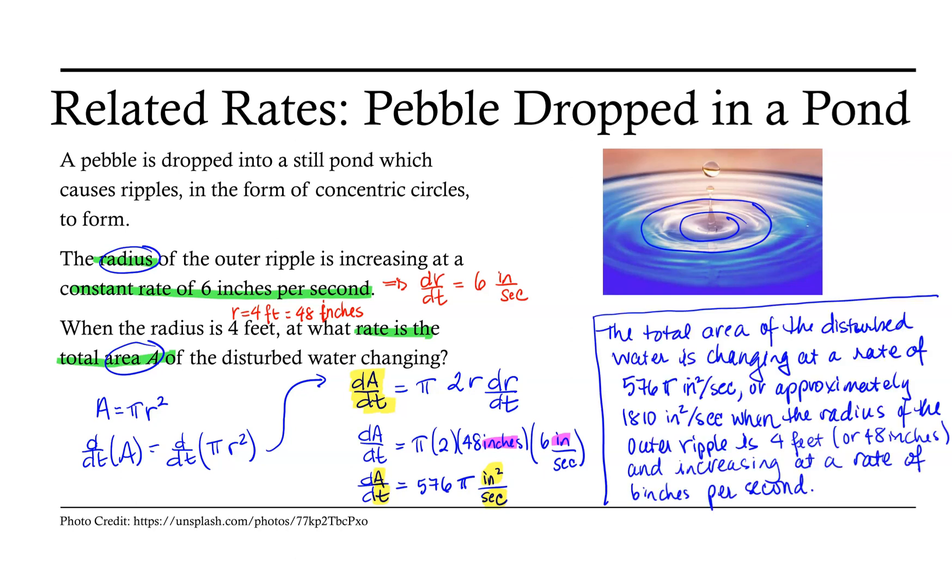So all that's left is for us to interpret what this means. We find that the total area of the disturbed water is changing at a rate of 576 pi square inches per second, or approximately 1810 square inches per second, when the radius of the outer ripple is 4 feet or 48 inches and increasing at a rate of 6 inches per second.